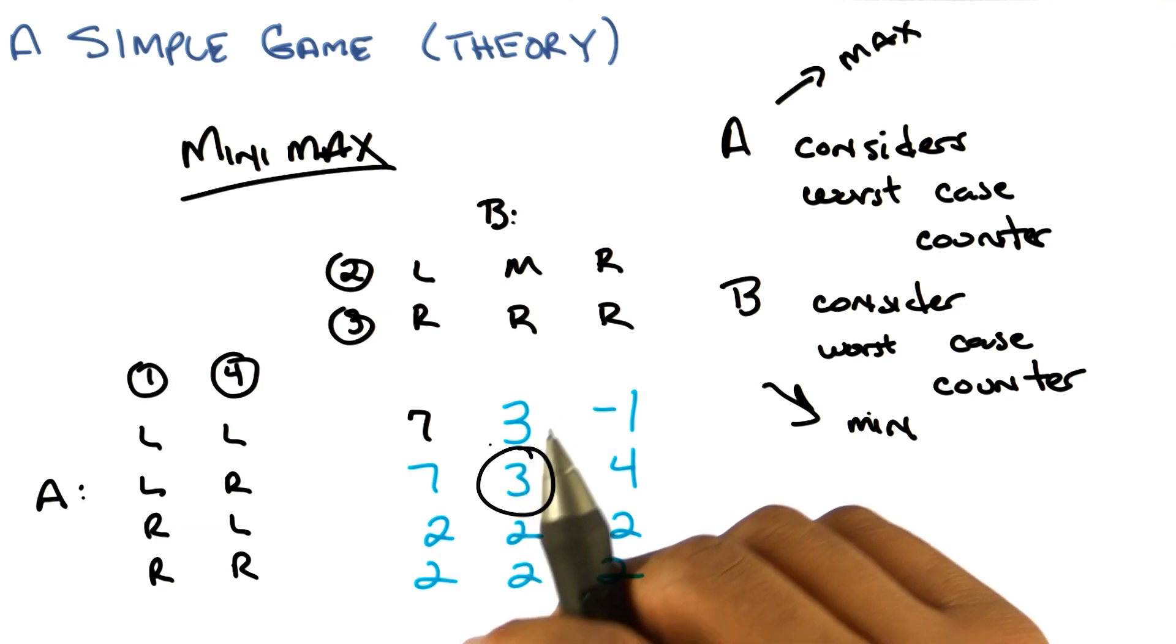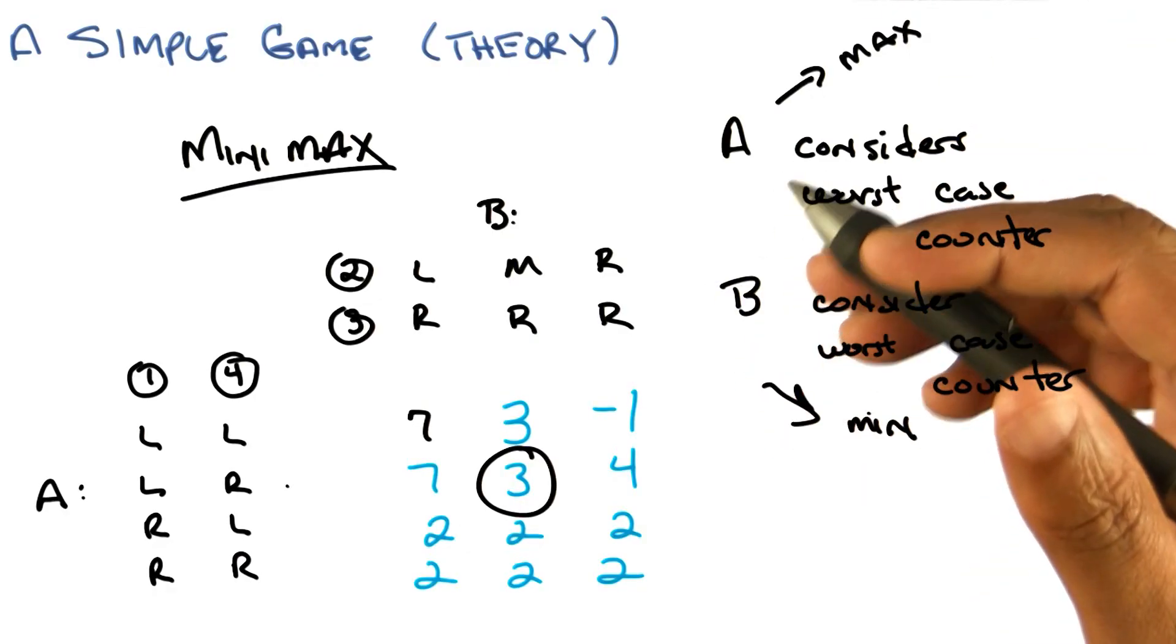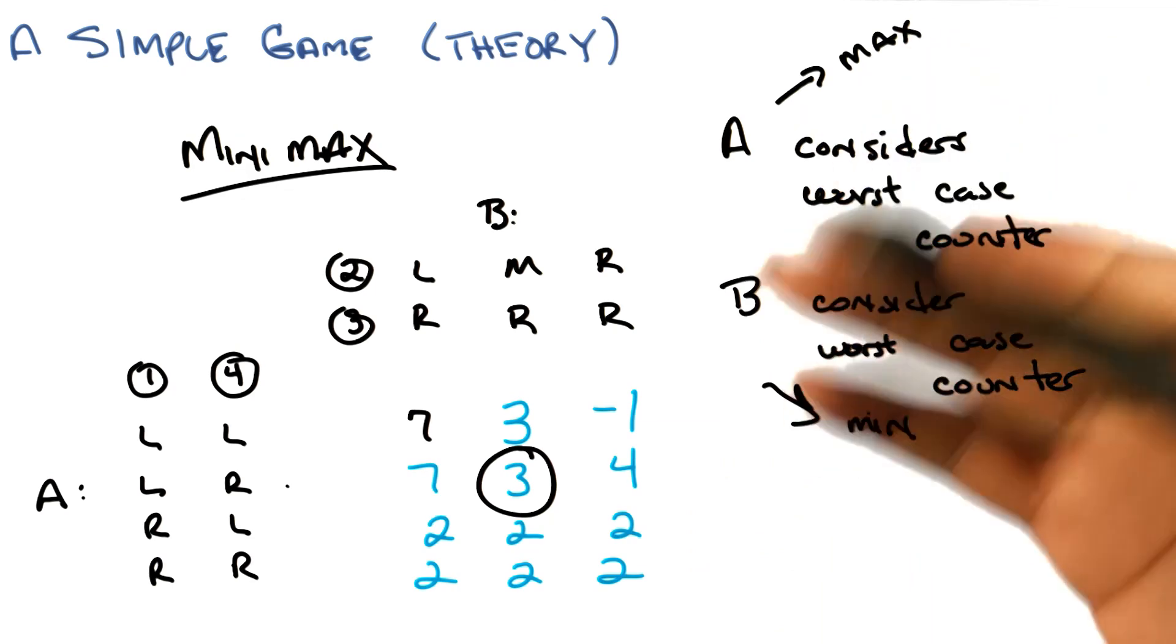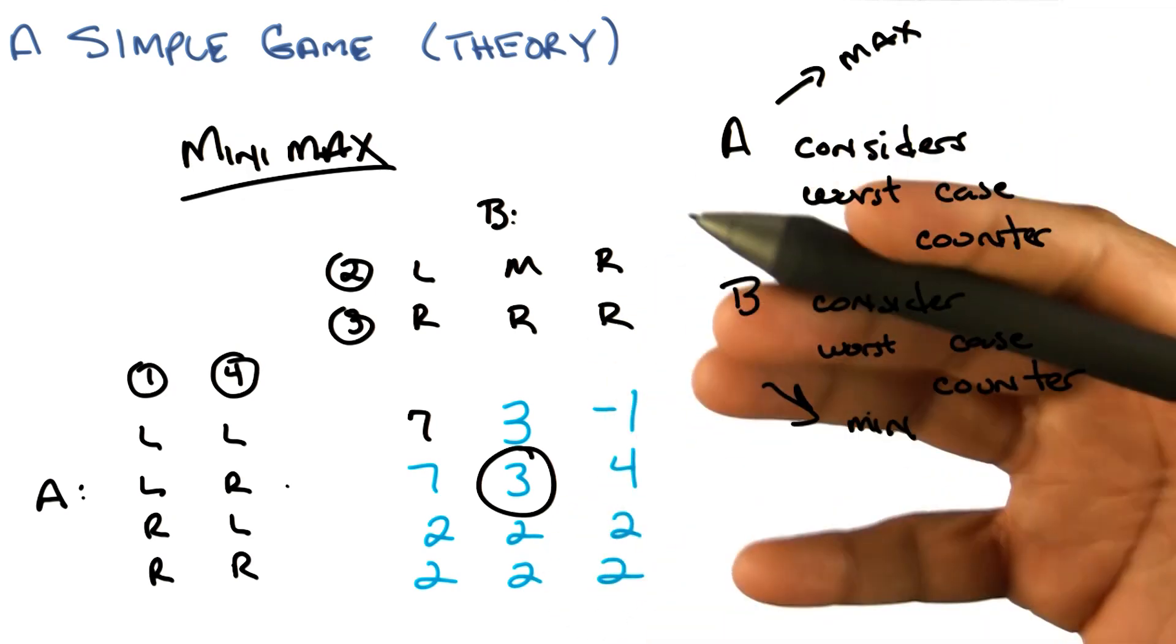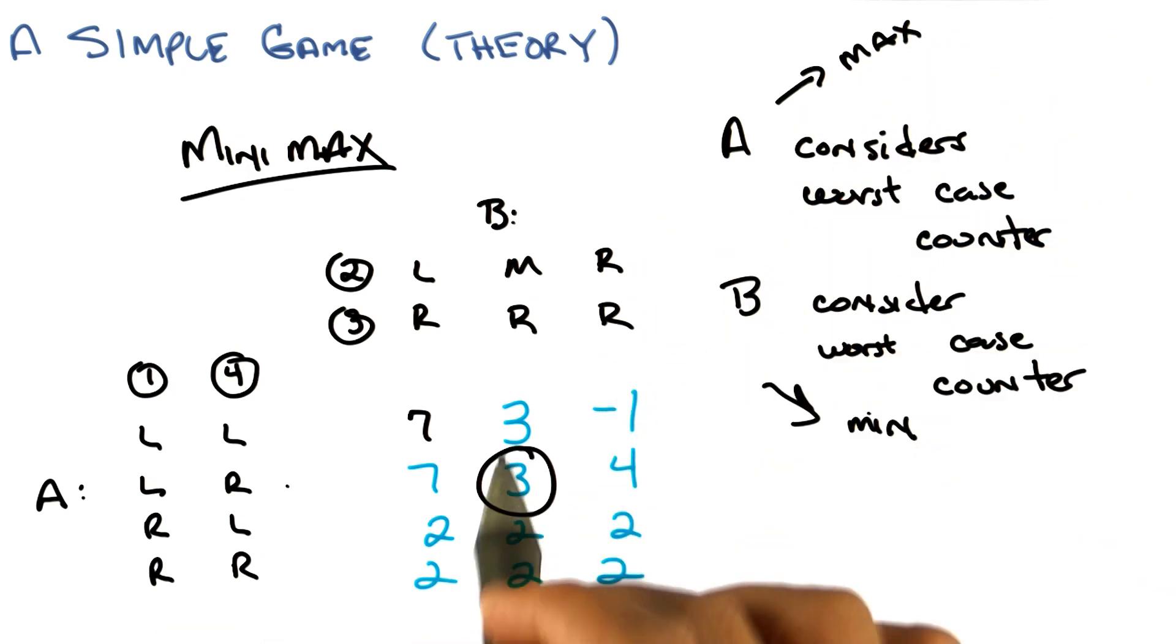In this case, by the way, we say that the value of this game for A is 3. If A does the rational thing and B does the rational thing, that is, trying to maximize their own value, you will end up in this situation. That's kind of cool, don't you think? Very cool. I feel like there should be a theorem. There is in fact a theorem. I'm going to write it down.